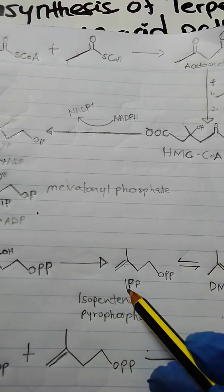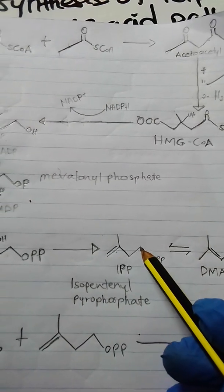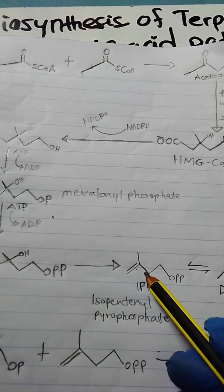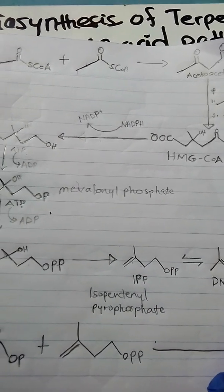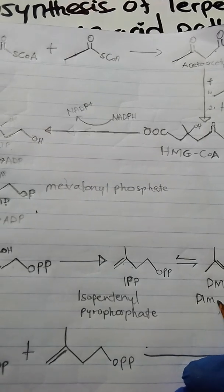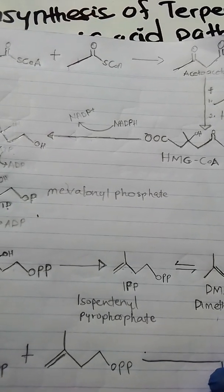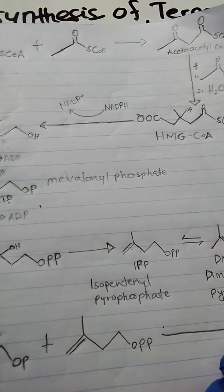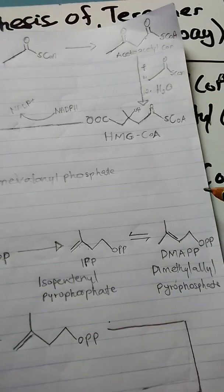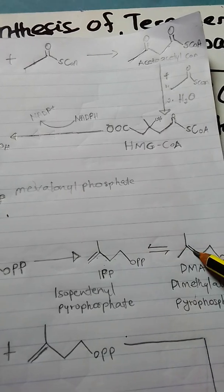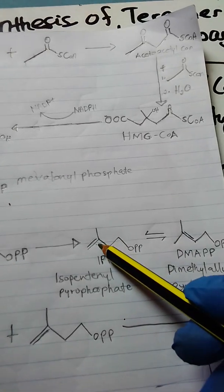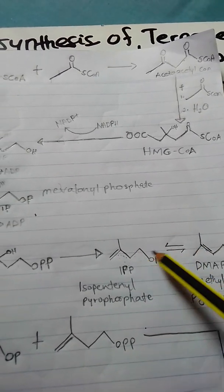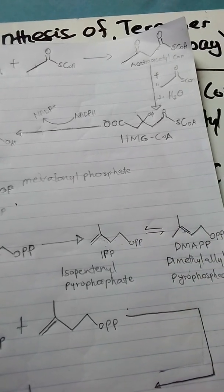This isopentenyl pyrophosphate will undergo an isomerization, as mentioned earlier. There is going to be a change of the double bond position to get DMAPP — dimethylallyl pyrophosphate. These two compounds differ in the position of the double bond. The significance of this reaction is to create a nucleophile and electrophile entity where the two can undergo additional reaction to proceed with the synthesis of terpenoids.